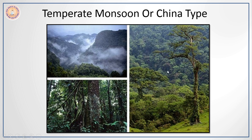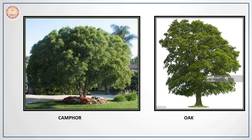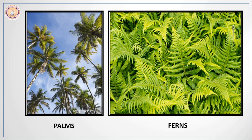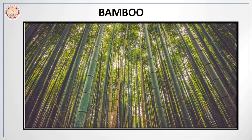The annual rainfall here is approximately between 50 to 150 centimeters, which is why it supports very luxuriant vegetation. It rains mostly during the summer due to the southeast monsoon. Since rainfall is very heavy, there is a rich variety of plant growth. Trees such as camphor, oak, magnolia, palms, ferns, and bamboo grow very well here. However, much of the vegetation and wildlife have disappeared because of very heavy population.